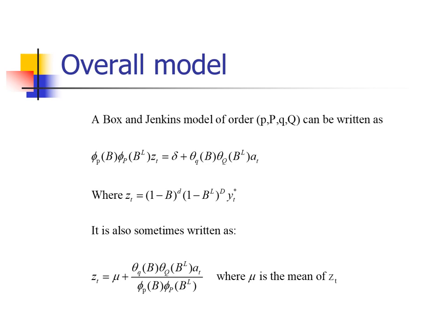We can do both at the same time with a mixed model. We can add two other polynomials in powers of B to the power L — so B to the L, B to the 2L, B to the 3L — giving us potentially two polynomials times Z sub T for the autoregressive component, one seasonal and one non-seasonal, equal to delta plus two polynomials in theta times A sub T. We can still define Z sub T using the backshift operator as 1 minus B to the power small d times 1 minus B to the L to the power big D times Y star, where Y star is our Y variable after potentially applying a pre-differencing transformation to achieve a common variance.